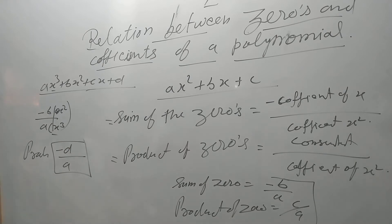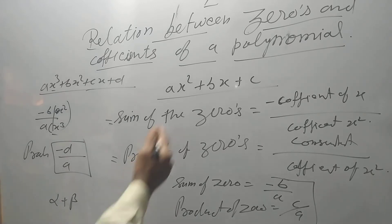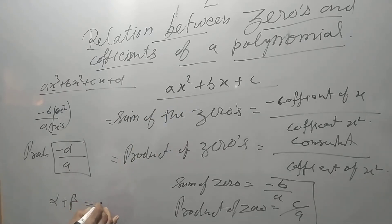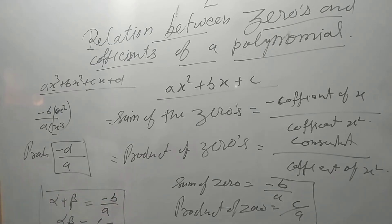We can say that if alpha and beta are the zeros of the equation, then alpha plus beta is equal to -b/a, and alpha into beta is equal to c/a. This is the condition for the coefficients and the zeros of the polynomial.